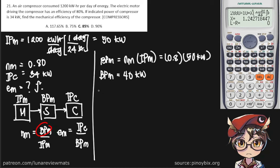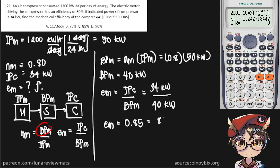Now we can find the mechanical efficiency of the compressor: IPC over BPM. IPC is 34 kilowatts, BPM is 40 kilowatts, and so we get a final answer of 0.85, or 85 percent.